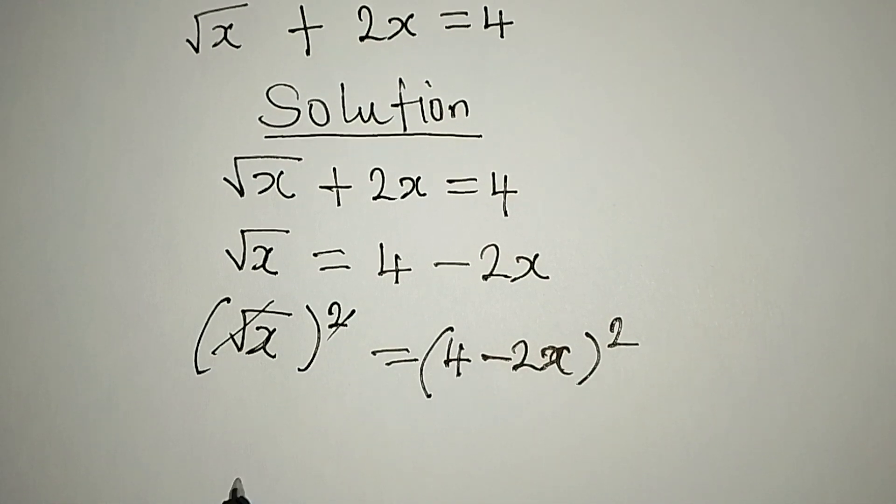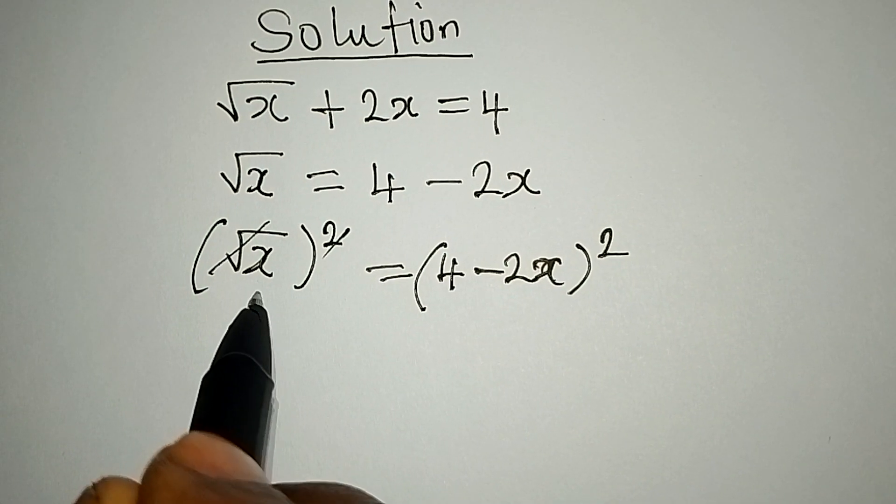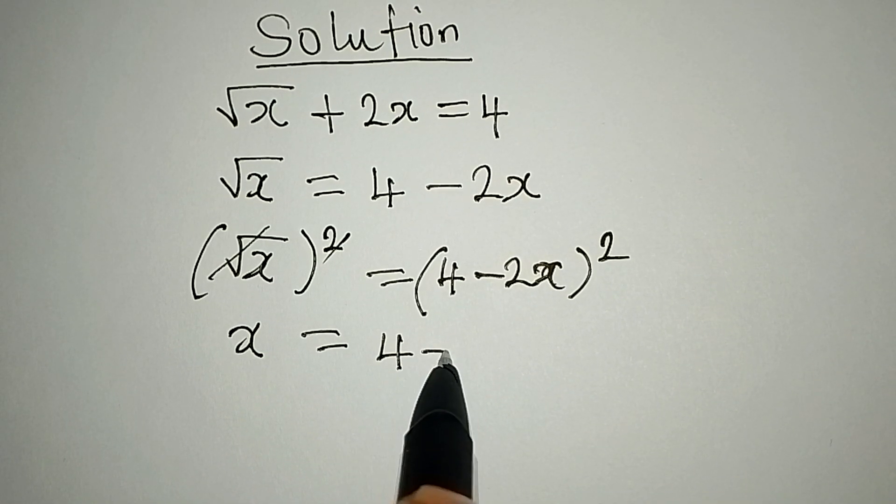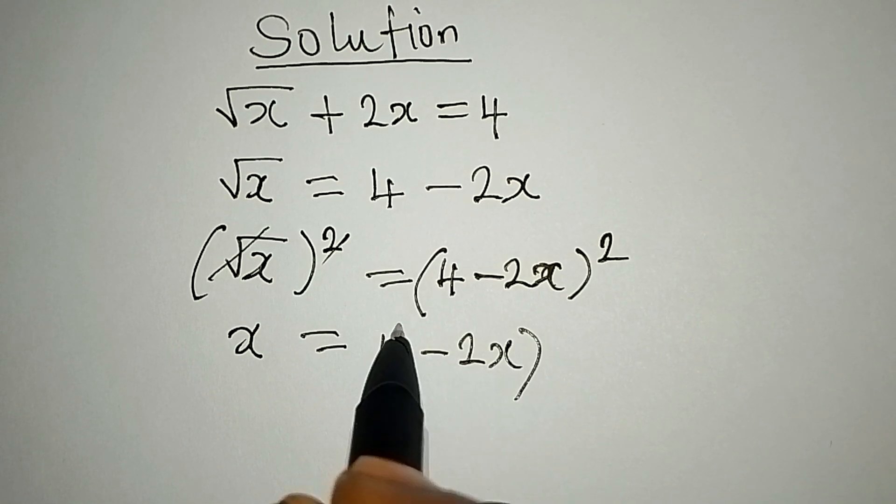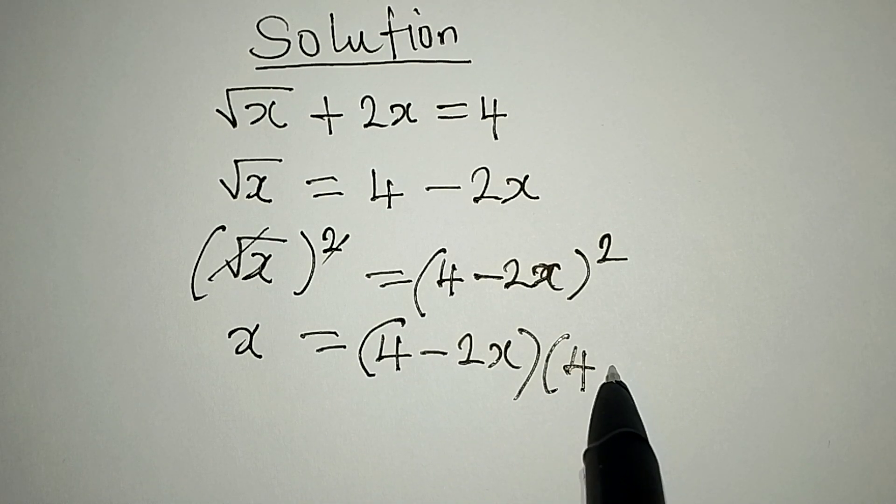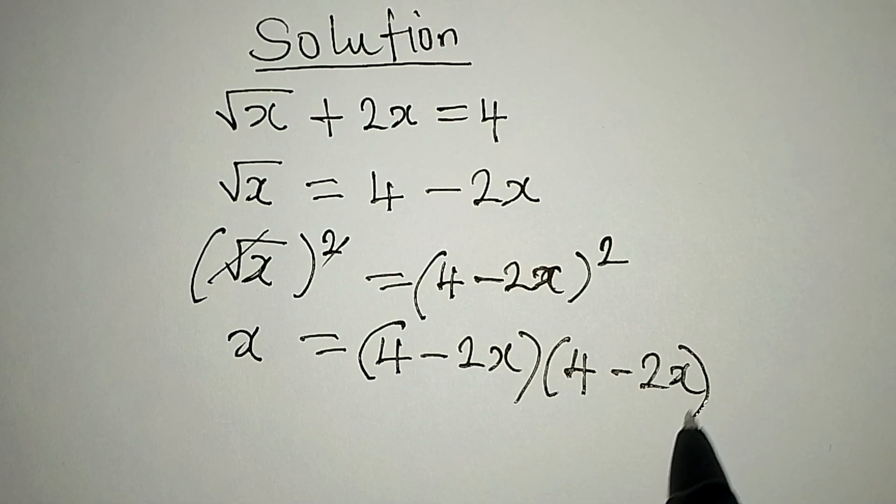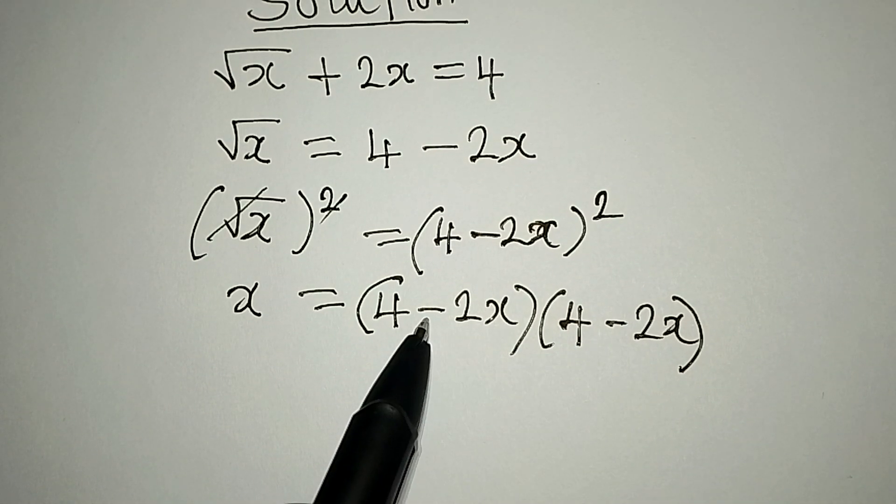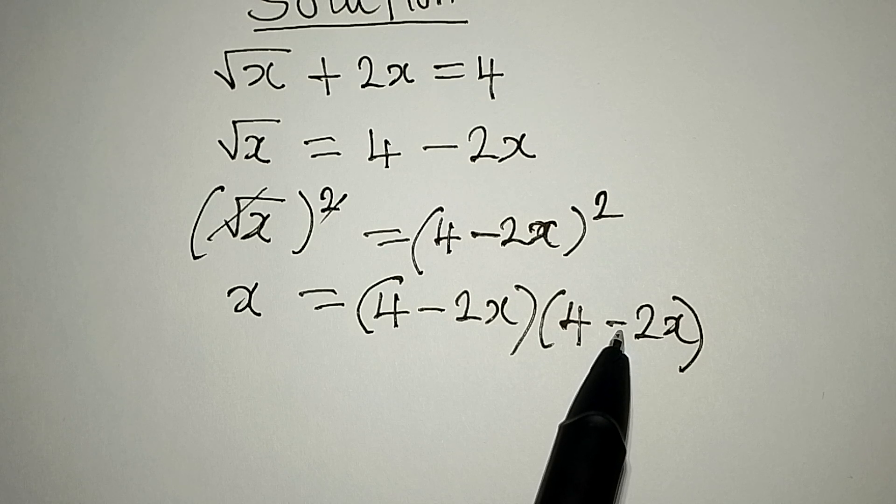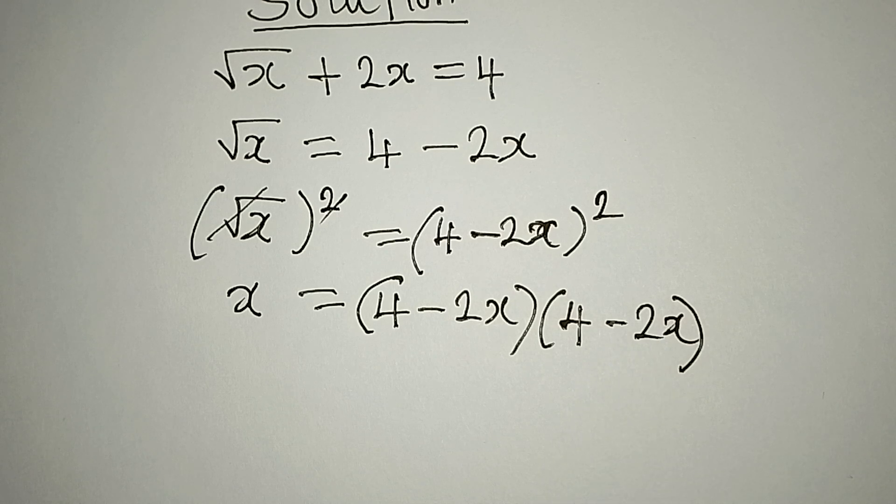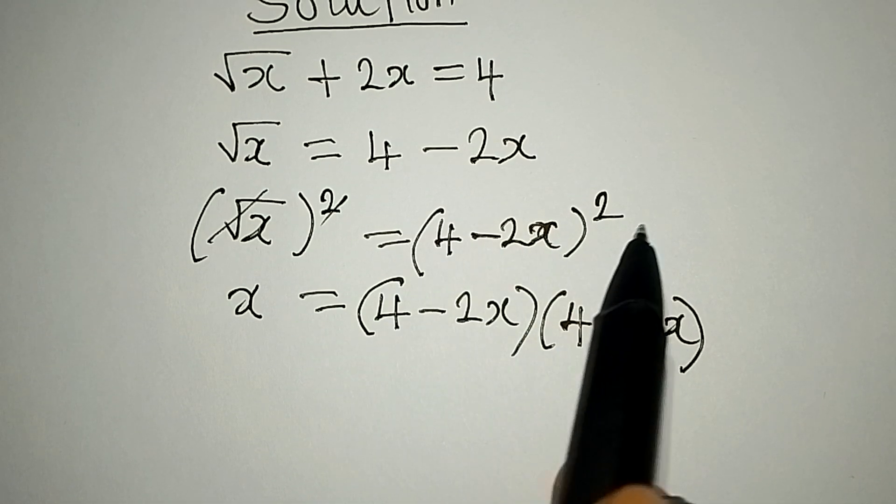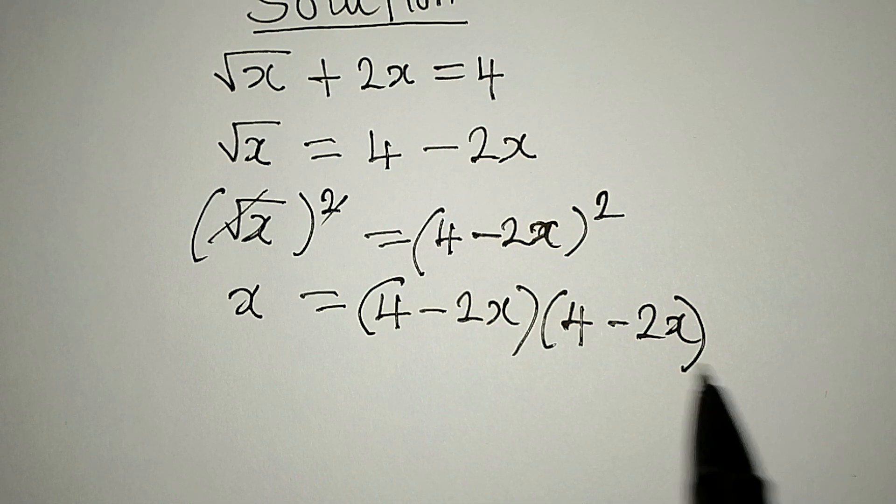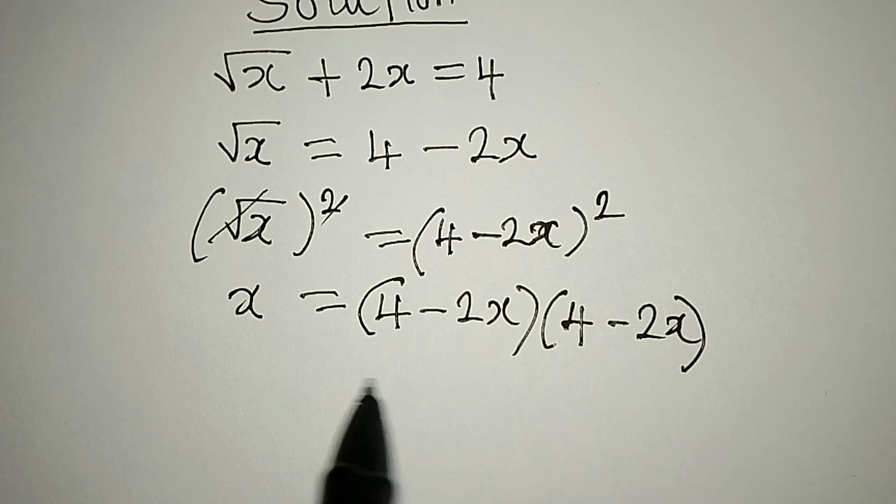This is going to cancel so that x will now be equal to 4 minus 2x into bracket 4 minus 2x. Now some learners will be tempted to change the sign here since this is negative, but it's wrong. 4 minus 2x to the power of 2 means 4 minus 2x in two places, so you don't have to change this sign.